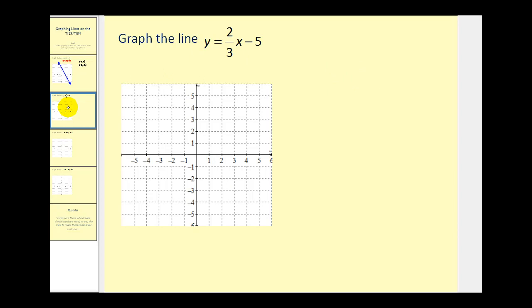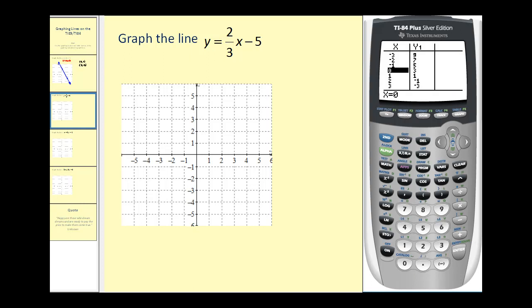Let's go ahead and try another one. Here we have y equals two-thirds x minus five. We do have to be a little careful when we have a fractional slope in slope-intercept form. So let's go back to the graphing calculator. Press y equals, clear out this line.